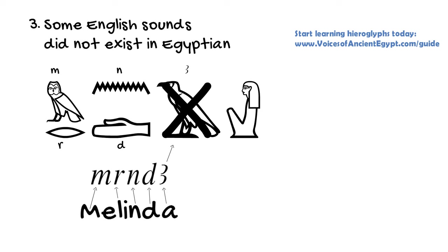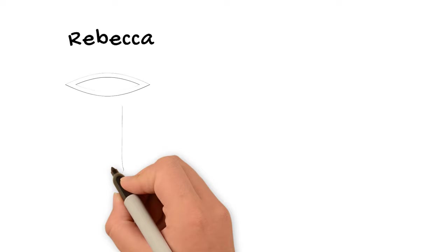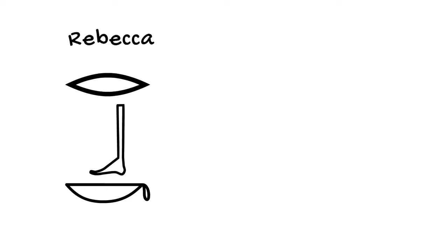When you do your own name, you can always make these judgment calls yourself as well as to whether to include a sign for an A sound or an ah, for example. Let's look at another example. This one's maybe a little bit simpler. The name Rebecca. I would spell it with the mouth hieroglyph for R, the leg for B, and the basket for a K. Now, if we wanted to follow the modern convention again of using a vulture or an arm for an A sound, we could do that at the end of this name as well, just like I did in my name. But we could also leave it out if we wanted.